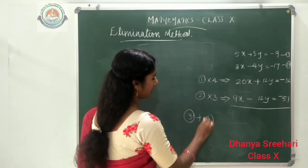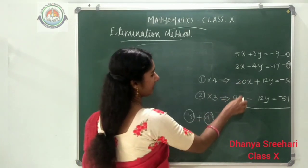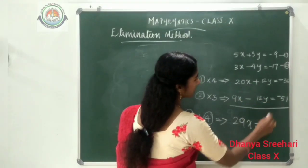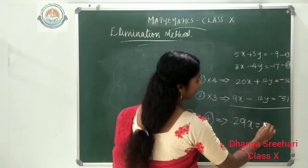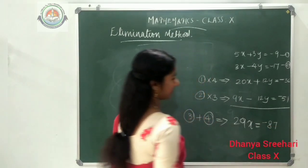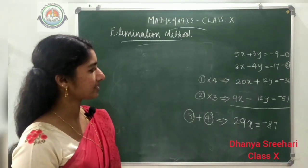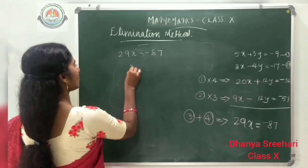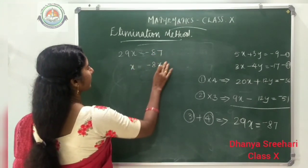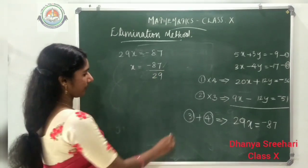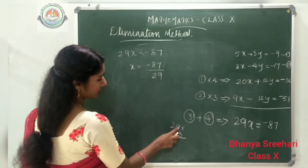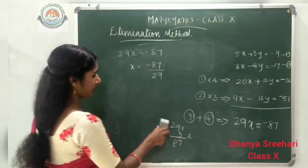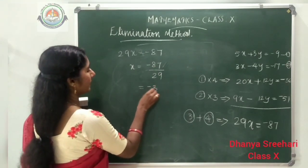Adding the two equations: 20 plus 9 gives 29x, and the 12y terms cancel to 0. On the right: minus 36 plus minus 51 equals minus 87. So 29x equals minus 87, and x equals minus 87 divided by 29. Checking: 29 times 3 is 87, so x equals minus 3.